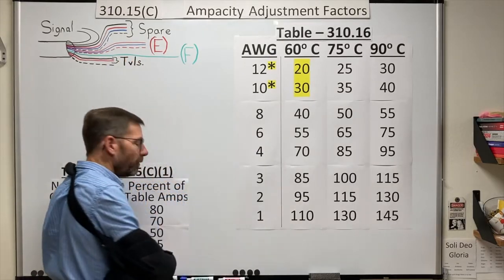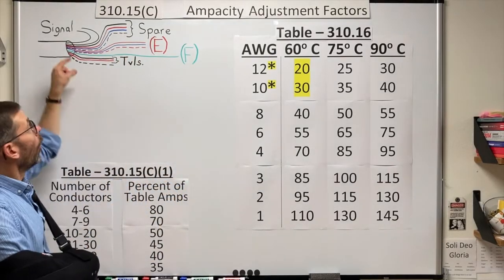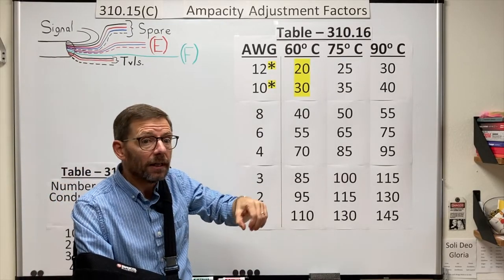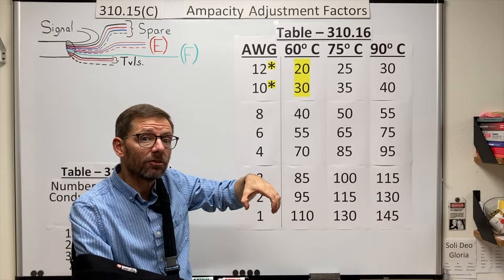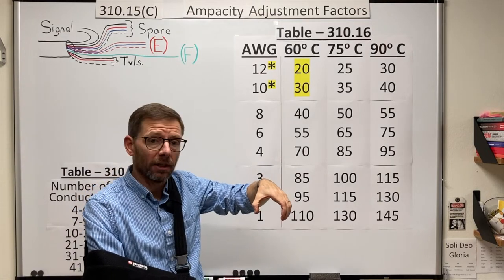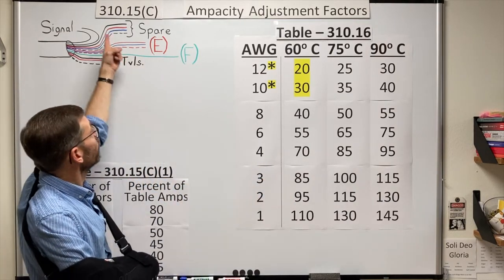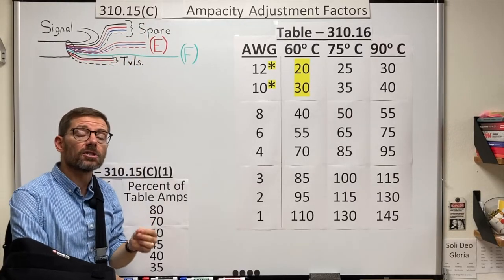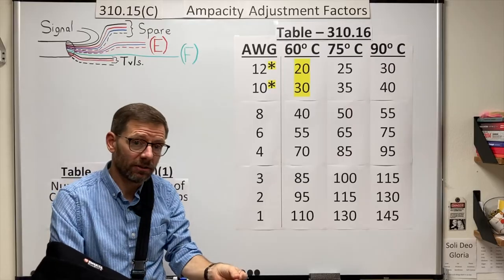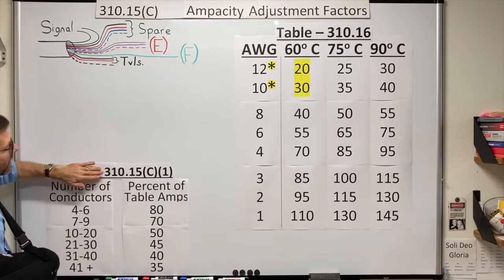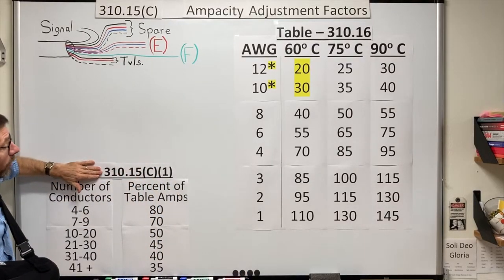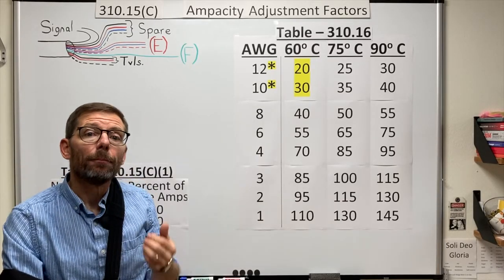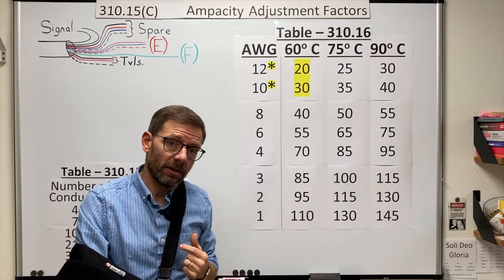Let's clarify a key point. All of these conductors need to be counted when we're doing conductor fill. How big of a conduit do I need to safely fit all the conductors? However, 310.15(C) is just concerned with the conductors that will be adding heat. So in the written section, 310.15(C)(1), it tells me I only need to consider power and lighting conductors.